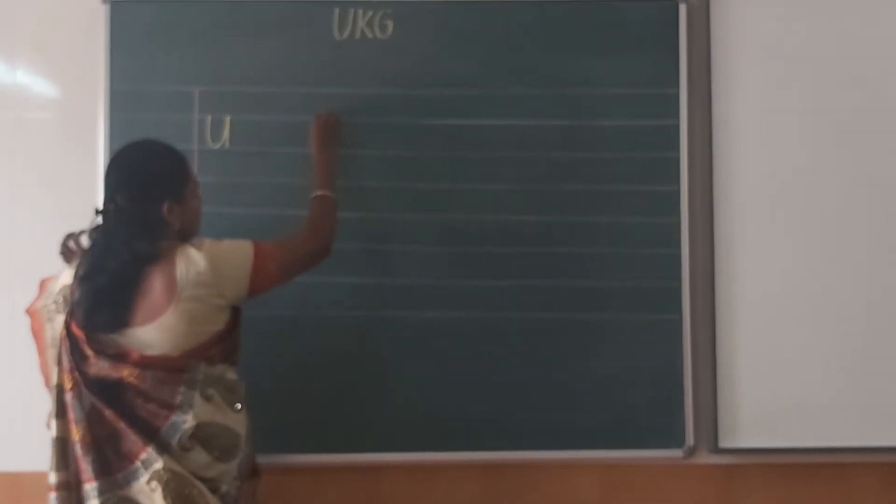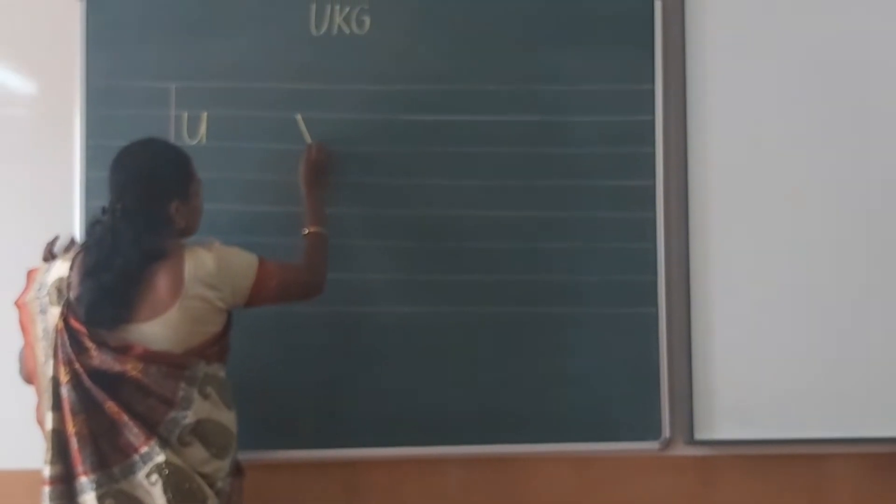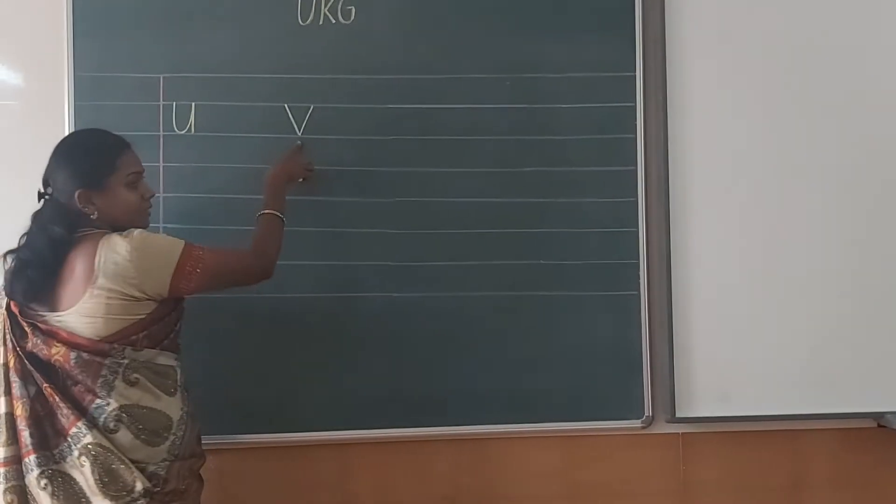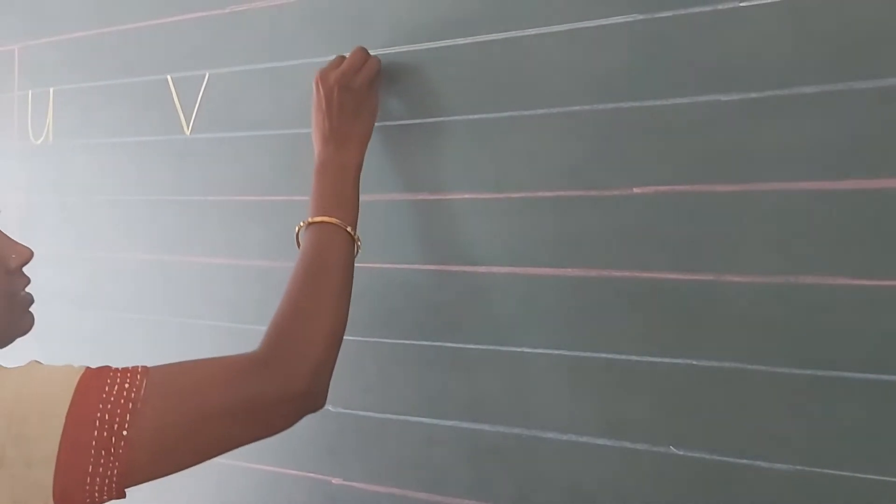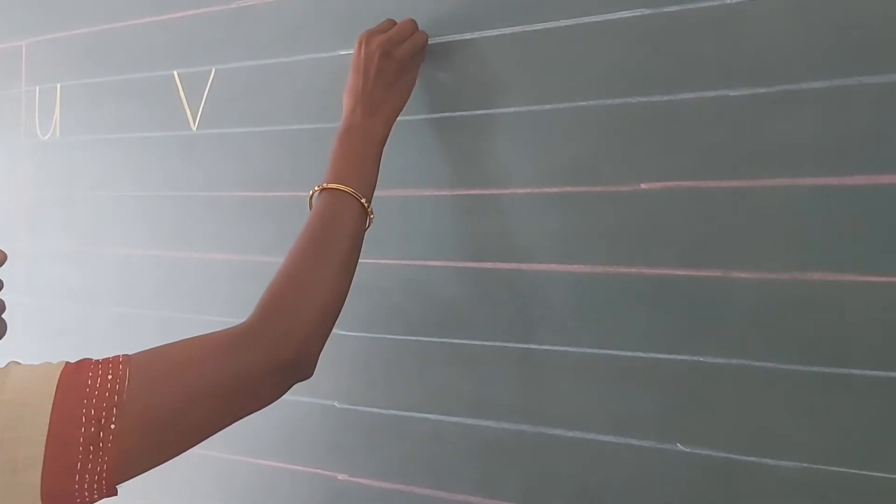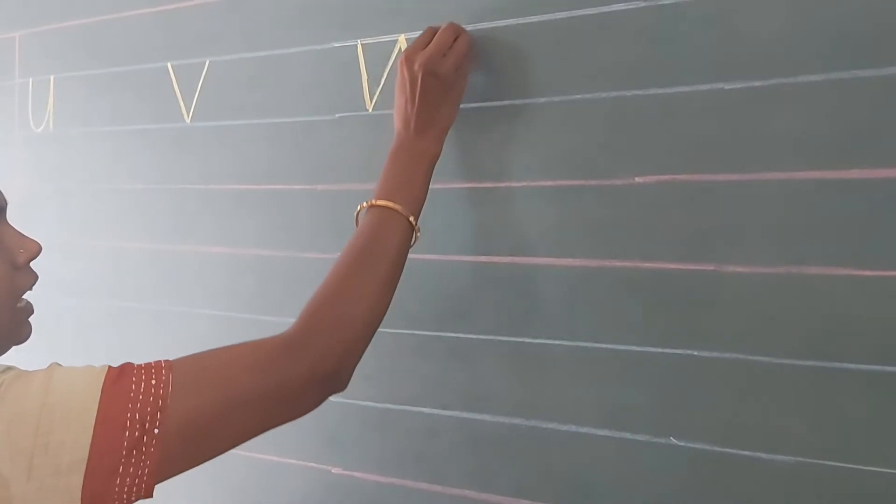Next one is V. V, two slanting lines may be letter V. Next one is W. See, slanting line, up slanting line, down slanting line, up slanting line. This is W.